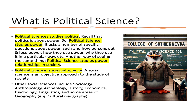From the natural sciences and the scientific method in general, we proceed to ask: what is political science? Political science studies politics, and politics is all about power — so political science studies power. It asks specific questions about power, such as how people get and lose power, how they use it, and why they use it in a specific way. Another way of seeing this is to say that political science studies power relationships in society.